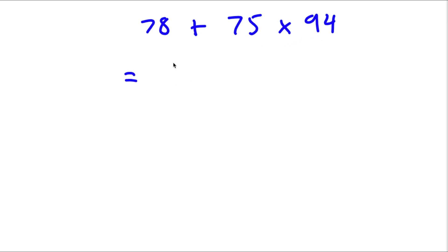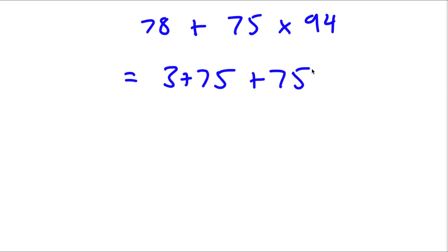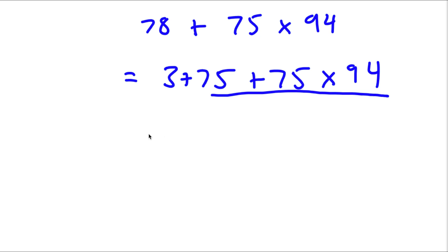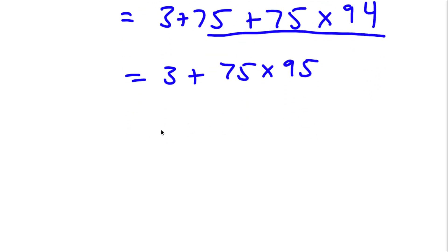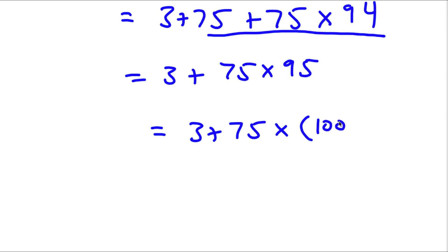The first thing I'm going to do is replace 78 with 3 plus 75, because 3 plus 75 equals 78. So now I have (3 + 75) + 75 times 94. Now 75 + 75 times 94 can be rewritten as 3 plus 75 times 95. And 95 is the same as 100 minus 5, so now I have 3 plus 75 times (100 - 5).